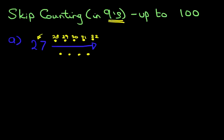33, 34, 35, and 36. So, the number after 27, if we are counting in nines, is 36.